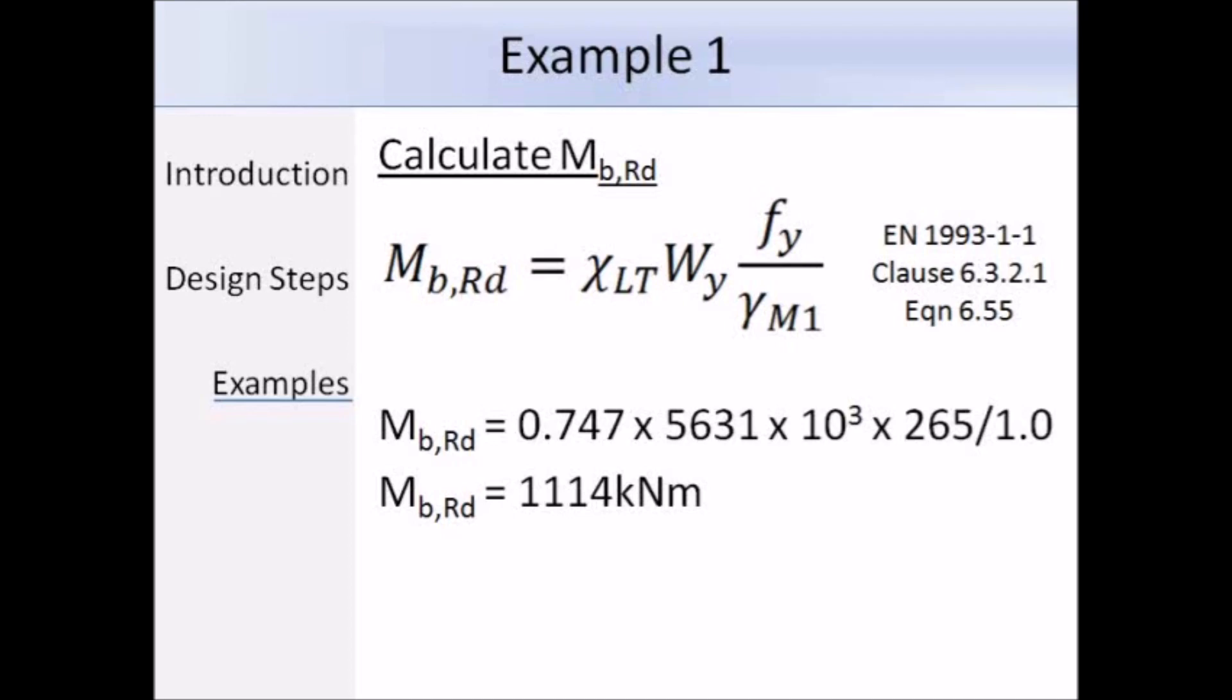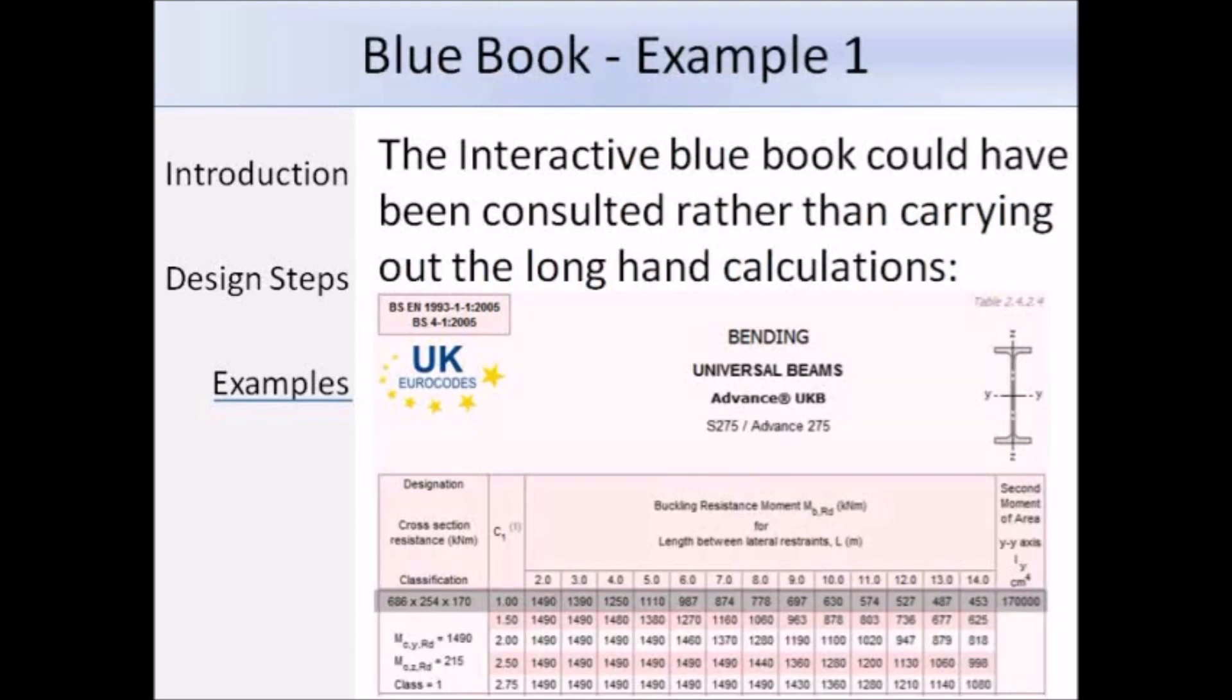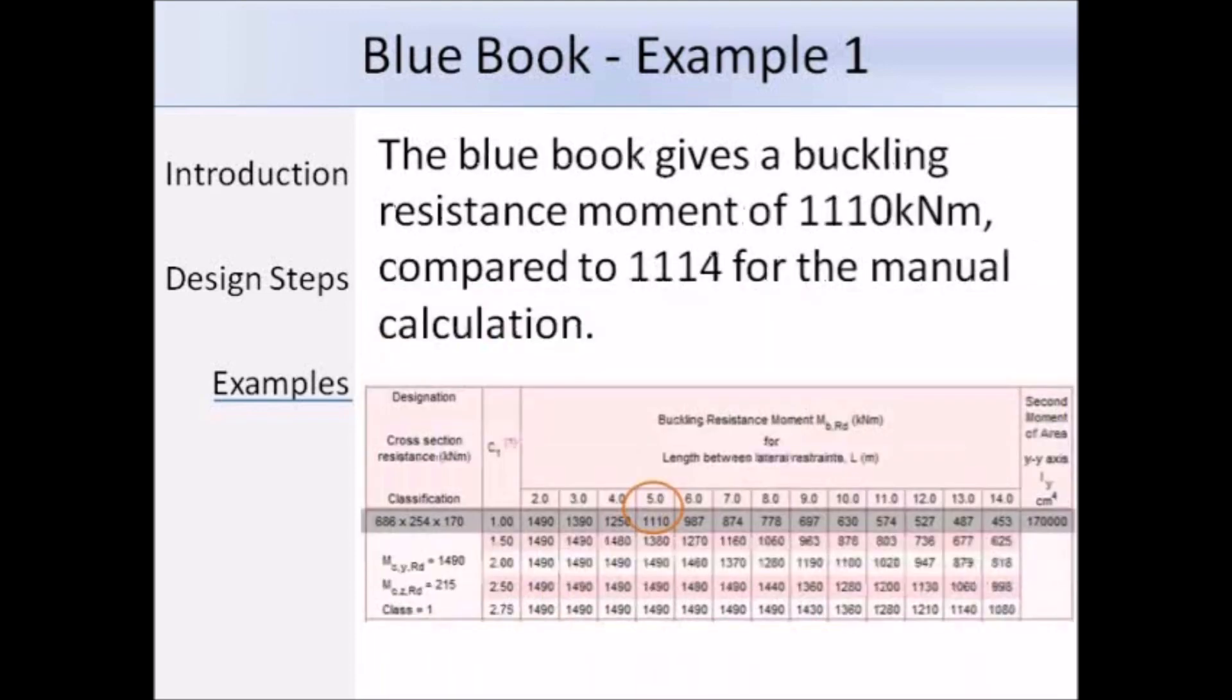Now rather than carrying out that long calculation by hand, we could at the same time refer to the interactive blue book. So our section is 686 times 254 times 170 UB, and we know C1 is equal to 1 because the moment is constant. For LLT of 5 metres, the buckling resistance according to the blue book is 1110 kNm. Now compare that to the result of the hand calculation where we got 1114 kNm, and they're very similar.